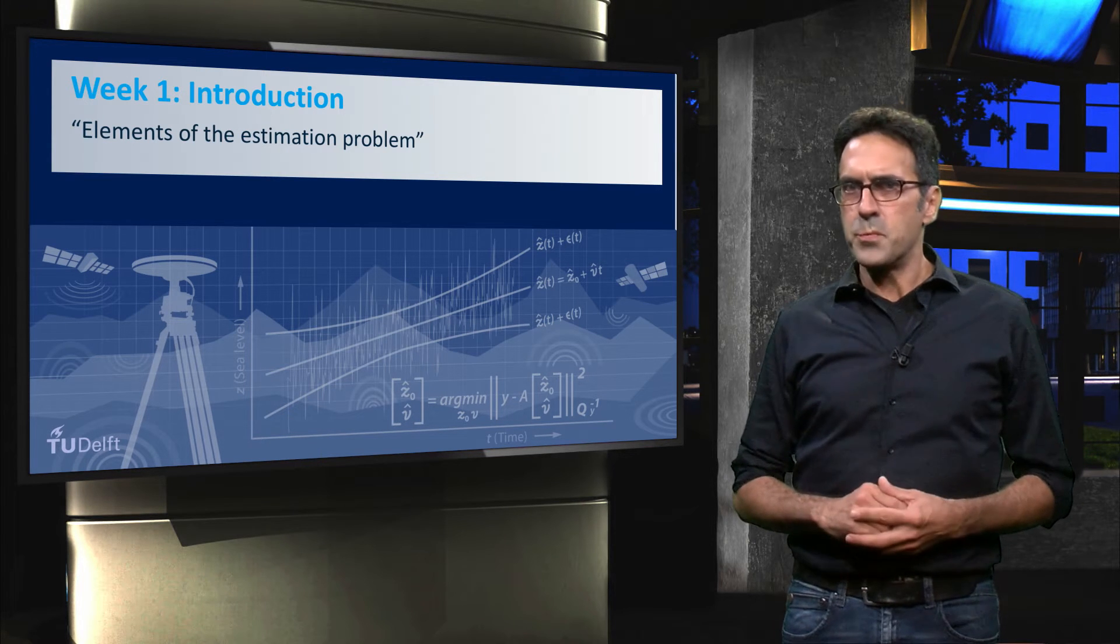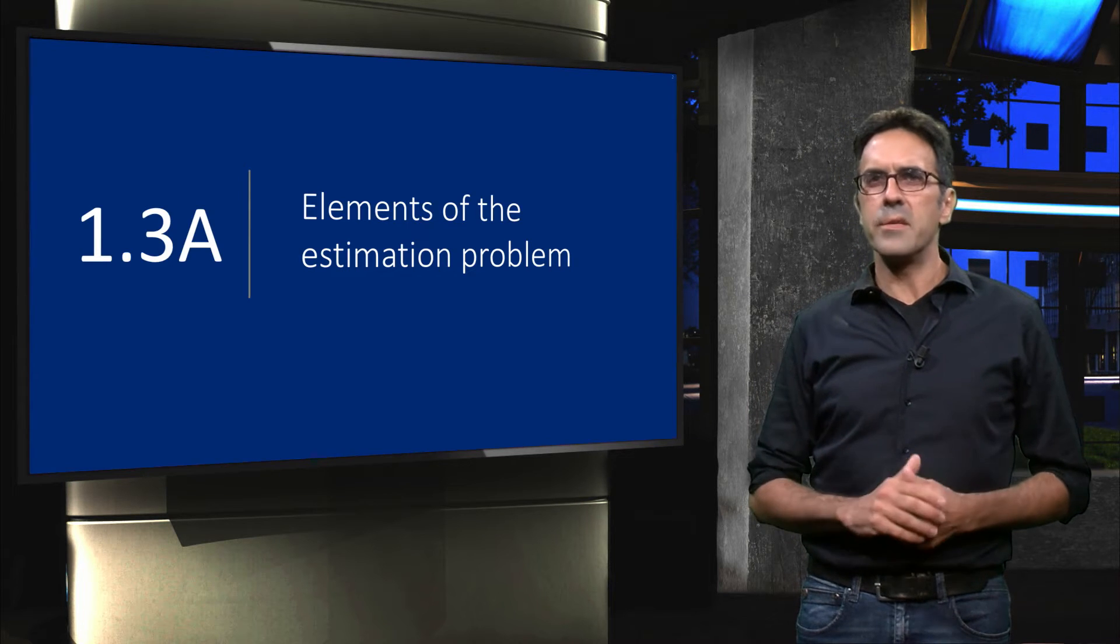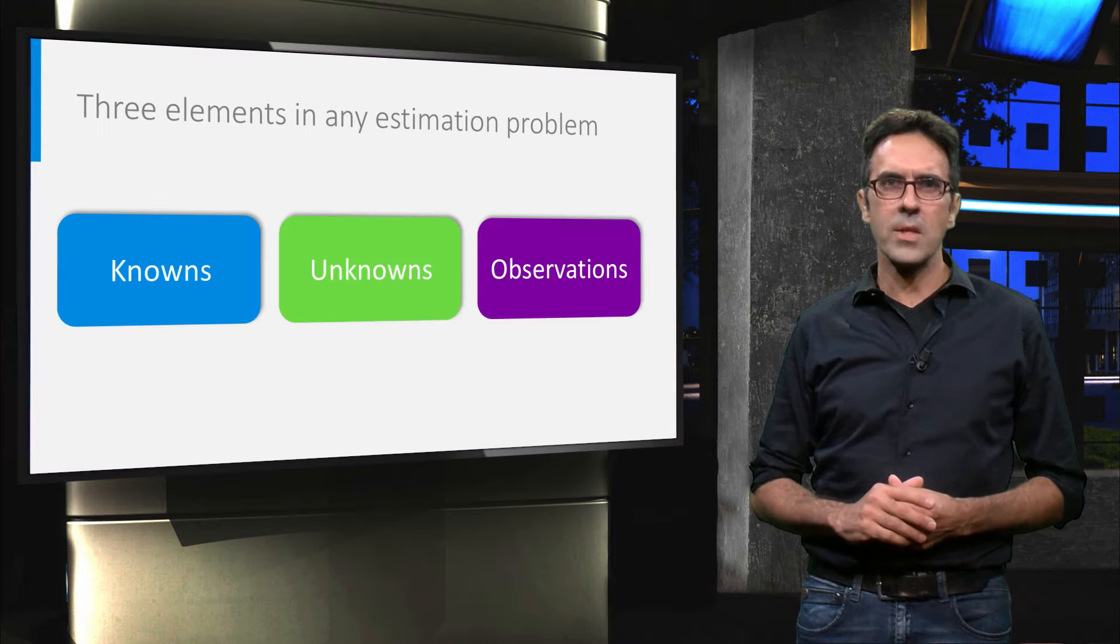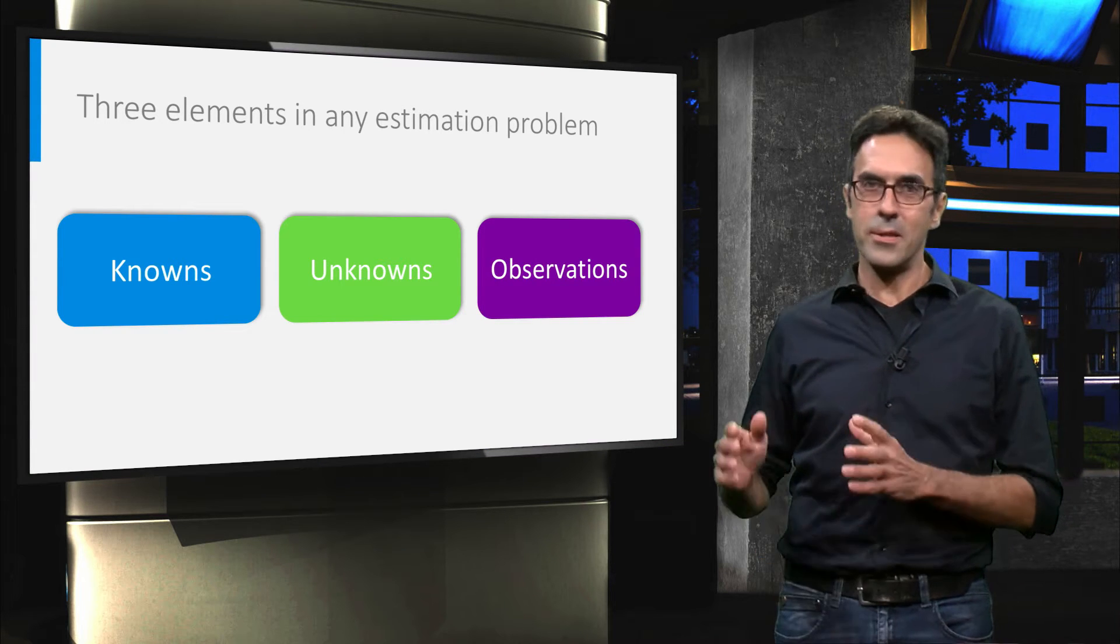One of the first steps in this procedure is to analyze the problem and to distinguish three different elements in the estimation problem. We refer to them as the knowns, the unknowns, and the observations.